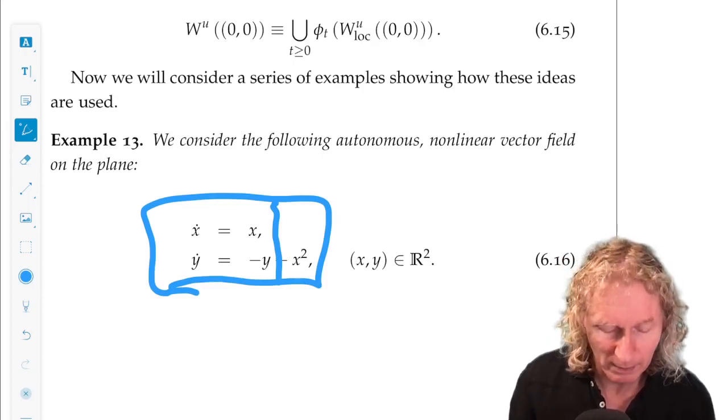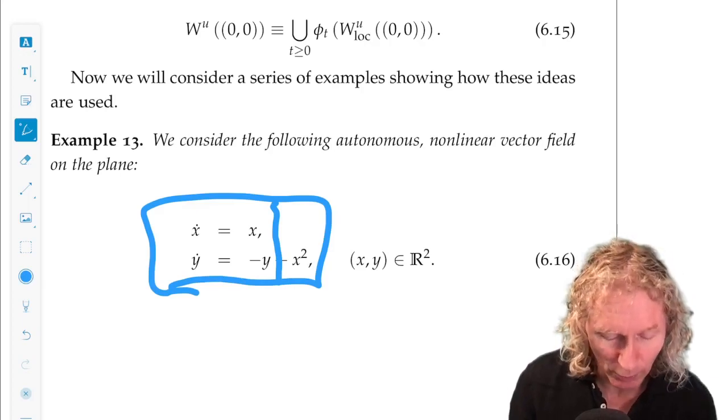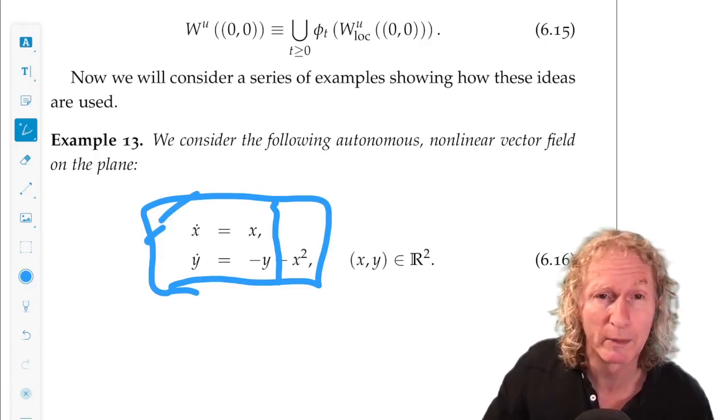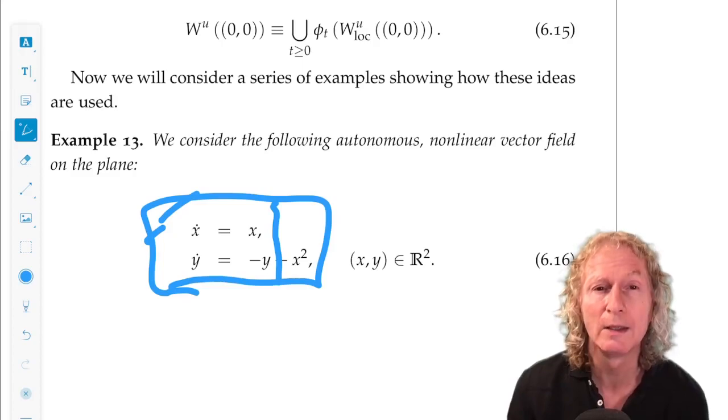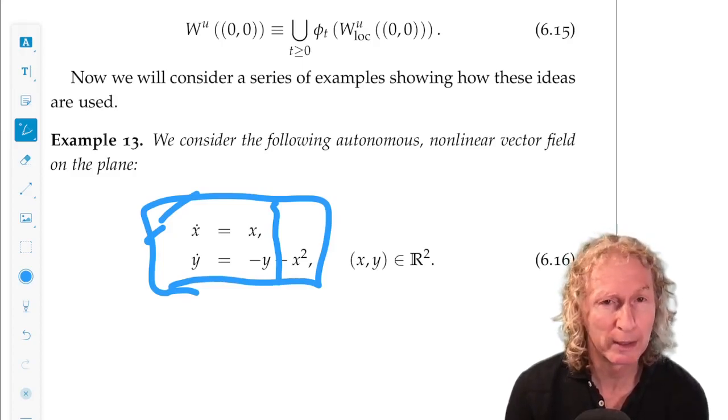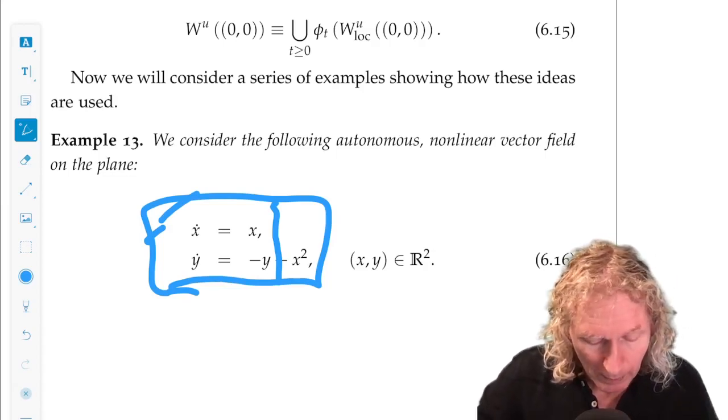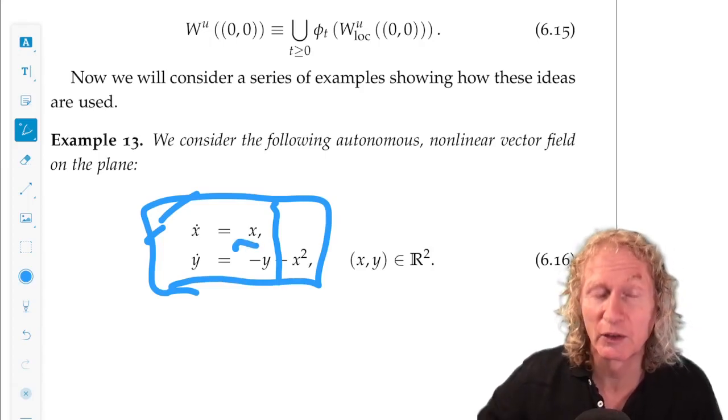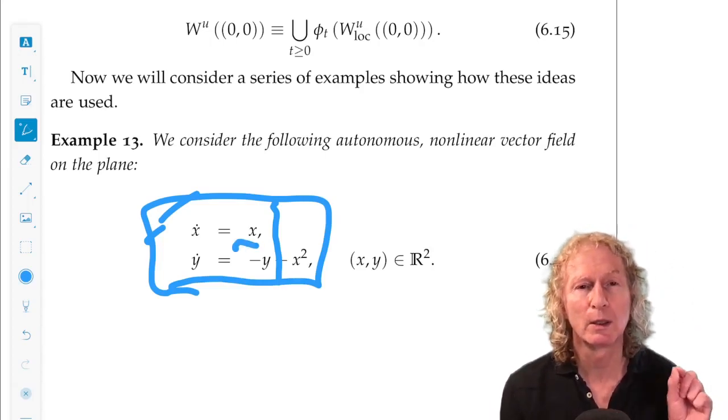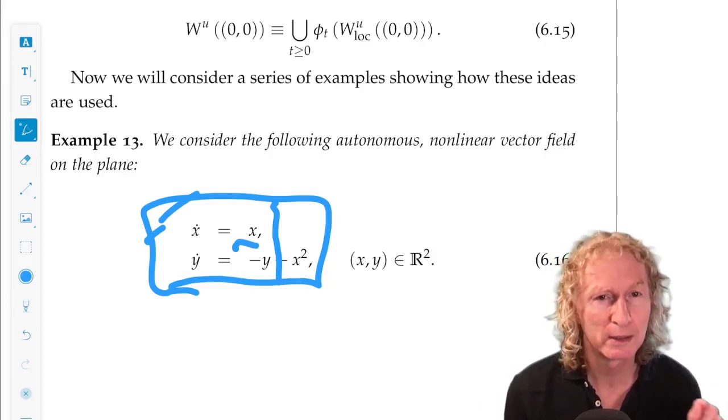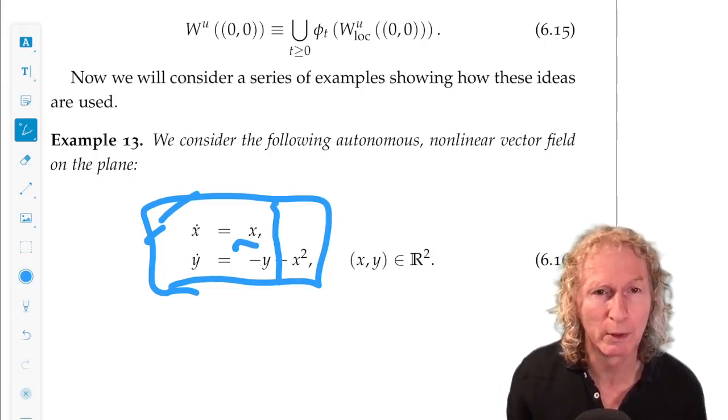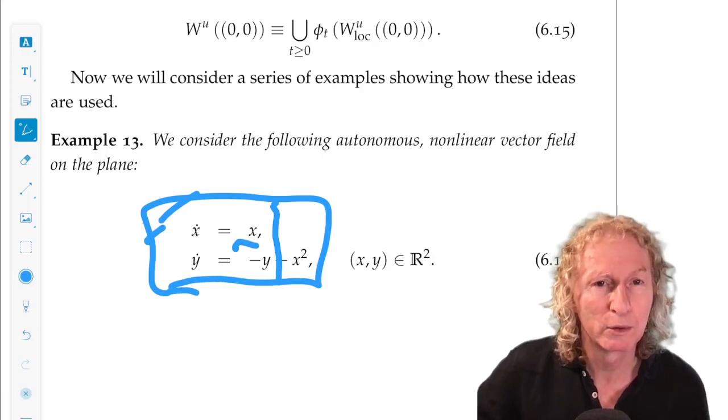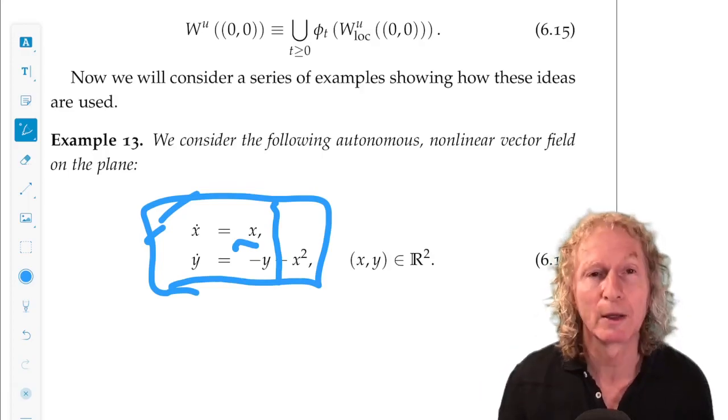The linearization about the origin is just given by this linear part because the vector field is in the form of the Taylor expansion about the origin already, and the linear part is already diagonalized. So, notice that if we set x equals 0, that x dot equals 0. So, when x is 0, it doesn't change from x equals 0. So, the y-axis, which is x equals 0, is an invariant manifold. In fact, it's the global stable manifold of the problem.